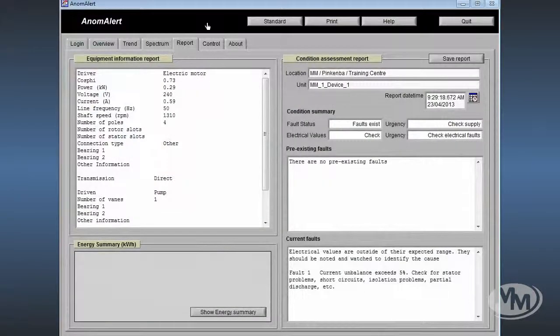The report page of the Anomalert software generates an automated report for the device selected. It can be seen here that the selected device is the training unit based in Pinkenba. The left hand side panel shows a summary of information on the unit being reported. To the right hand side, we see a summary of faults on the unit.